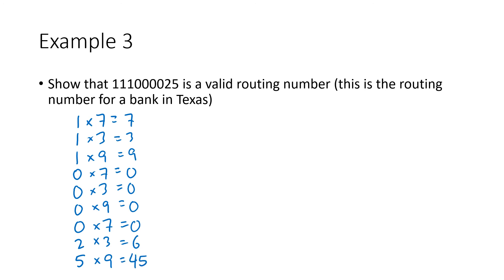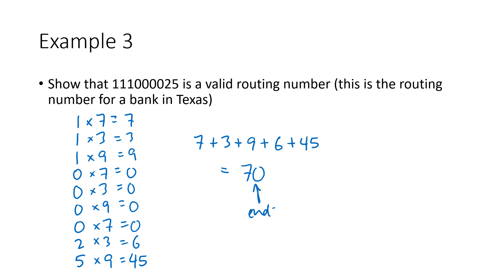We add all those numbers up: 7+3+9+6+45 (skipping the zeros since they contribute nothing) gives us 70. This ends in 0, so this routing number is valid.